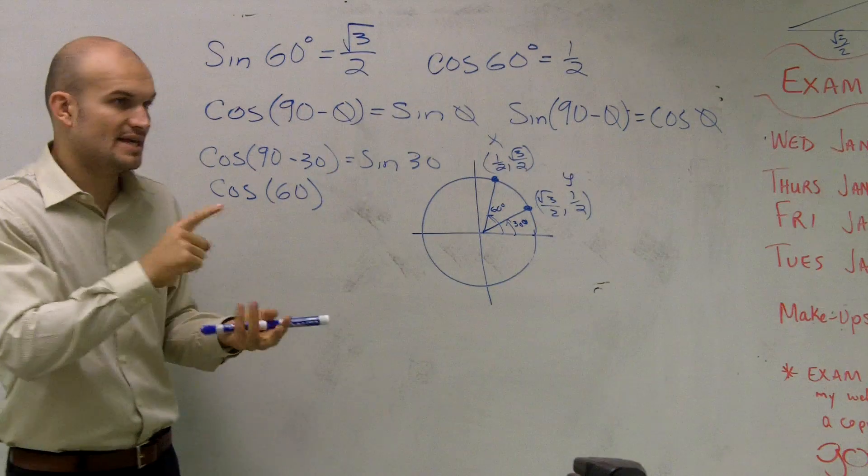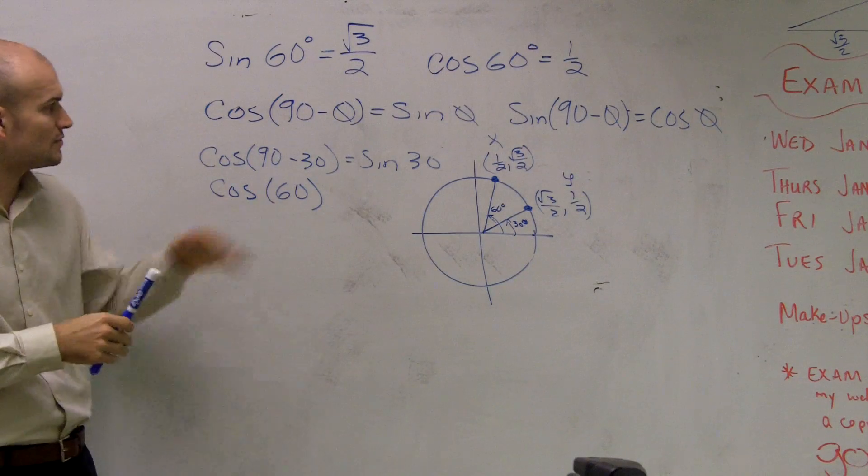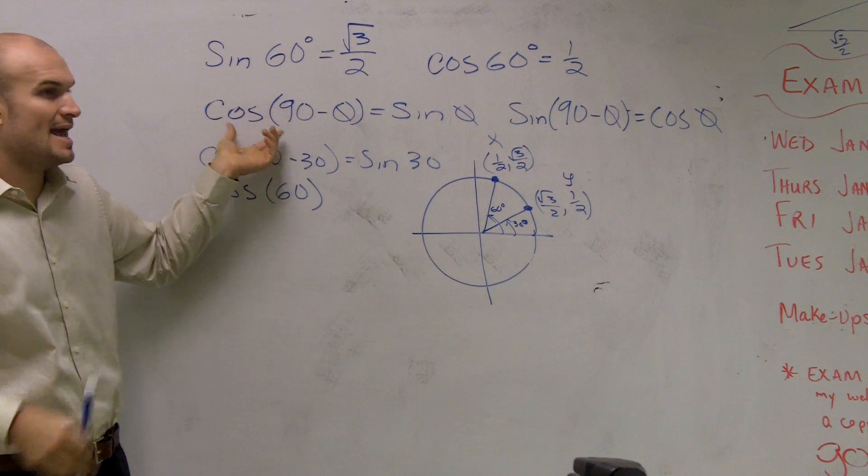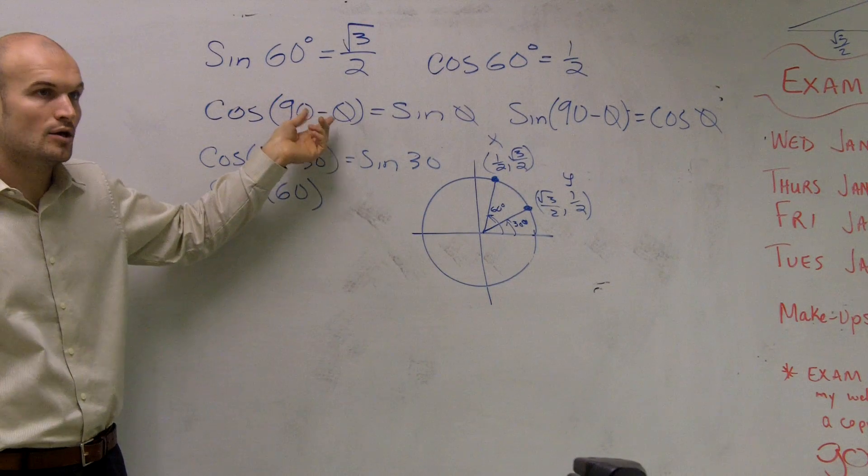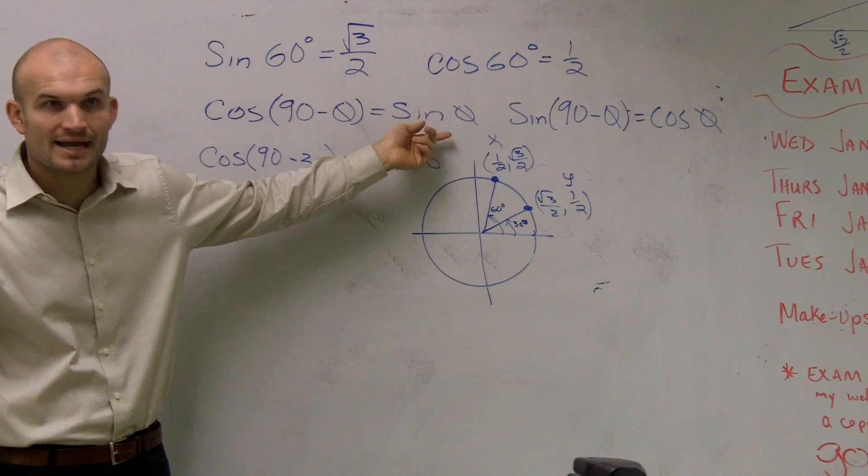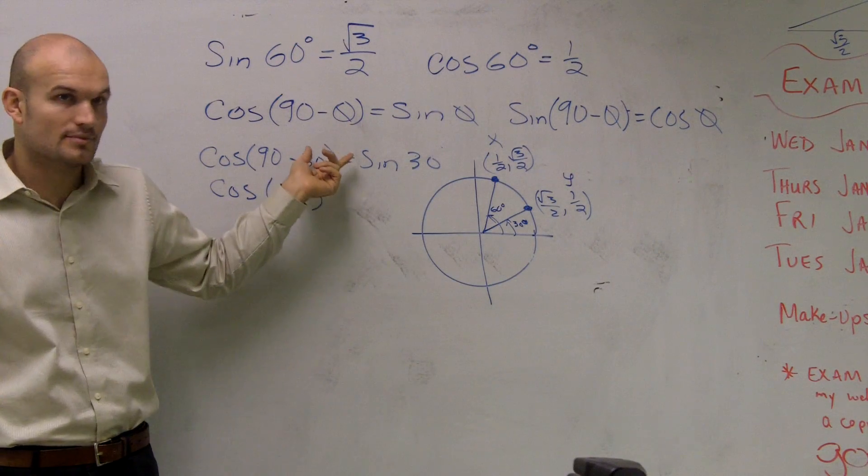So what we're saying is, these two functions, and it works for your secants and your cotangent as well. But what I'm saying is, if I know one angle in cosine, and I subtract that from 90, what I subtract that from is going to give me my sine of that angle. They're equivalent, OK?